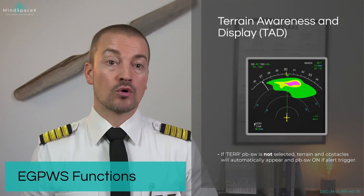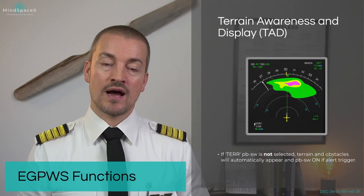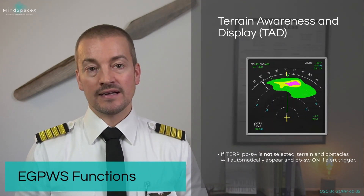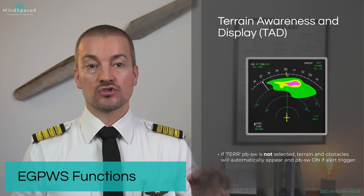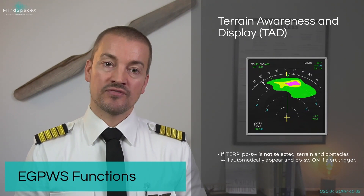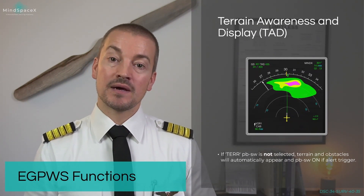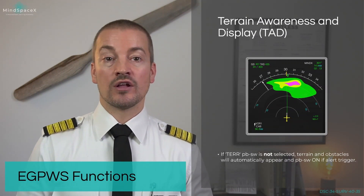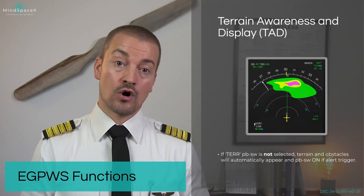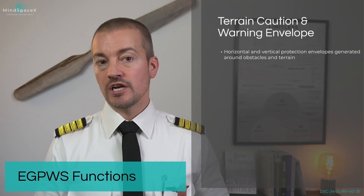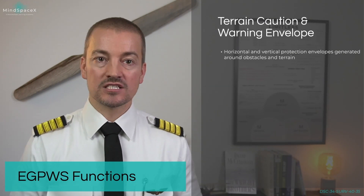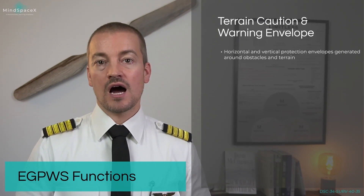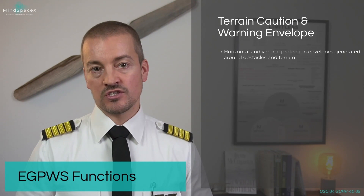If you are flying and you don't have the terrain push button on, or you have the weather imagery from the weather radar on, then if the Terrain Awareness and Display function is triggered, it will automatically bring up the terrain on the ND together with the terrain button light on. Within the database, terrain caution and warning envelopes exist both horizontally and vertically to create a protection zone around obstacles and terrain features.